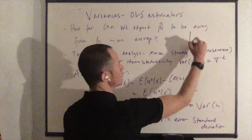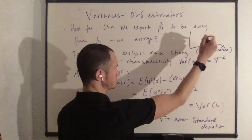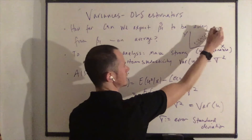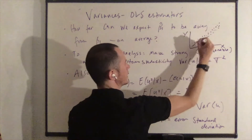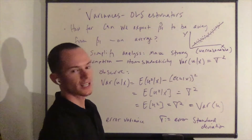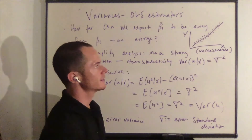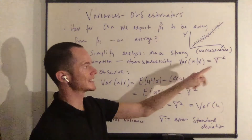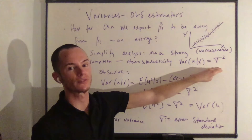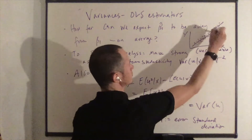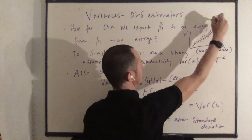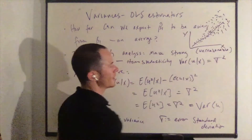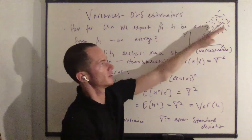If you think about what homoscedasticity means: if you have a variable x and perhaps a variable y, and maybe the observations look like this, and your regression line is like that — the spread is constant over the domain of x. This is in contrast to heteroscedasticity, which is the result that the variance of u given x is not constant — it is some function of x, and that might look something like this, where as x gets larger, the spread of the observations becomes wider.